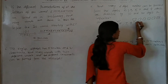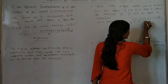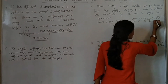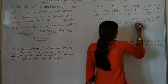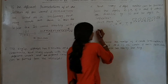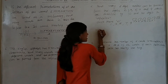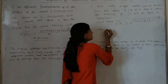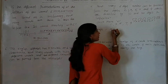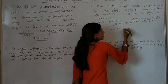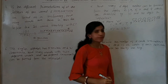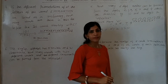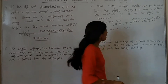5 factorial: 5 × 4 × 3 × 2 × 1. Solve karenge toh humare paas aayega: 5 factorial is 120. Theek hai?